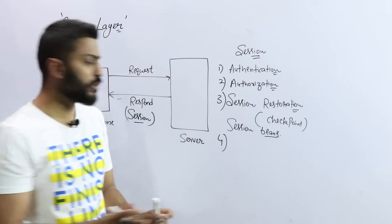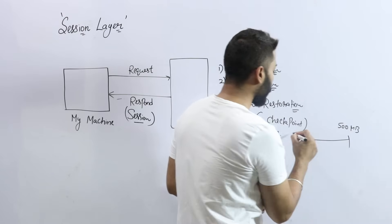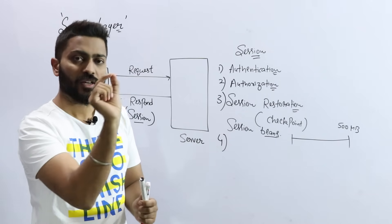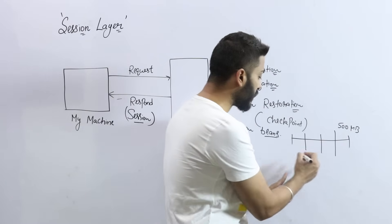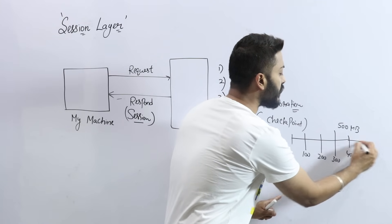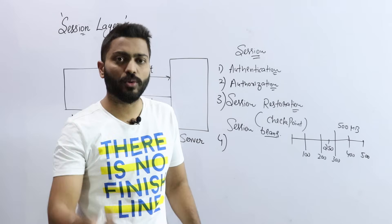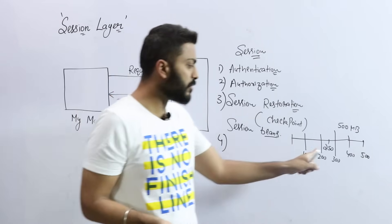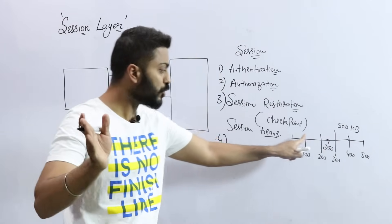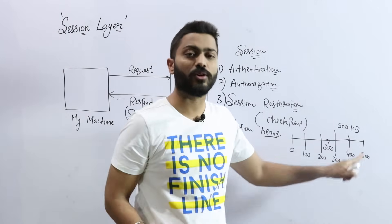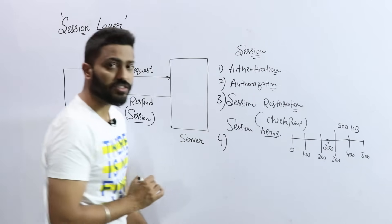Another feature is checkpointing. For example, if you are downloading a video of 500 MB, YouTube creates checkpoints after every certain interval. After every 100 MB there is a checkpoint. If your download stops at 250 MB due to a connection drop, next time when you resume, it will start from 200 MB — the last checkpoint — not from zero. This saves performance and time.